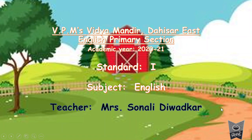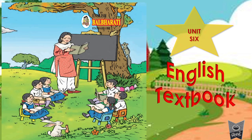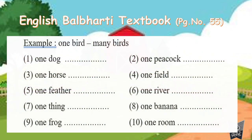Good morning students, welcome back to our English class. Today we are going to start with the exercise for lesson number 2 from unit 6, 'Shams Horse Cart.' Please open your textbooks to page number 55. Since I have an old textbook, the page number might not be matching, so just look at this exercise. We have already learned in grammar: 'one' and 'many.'